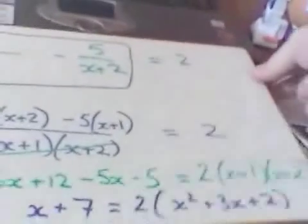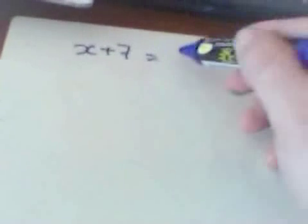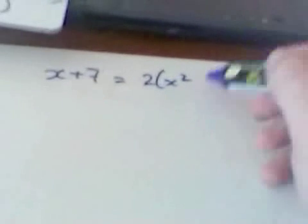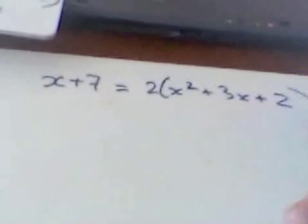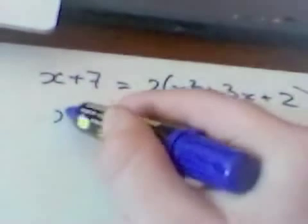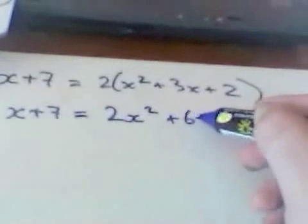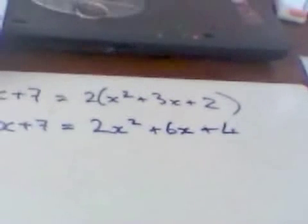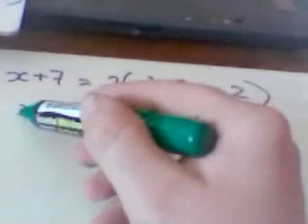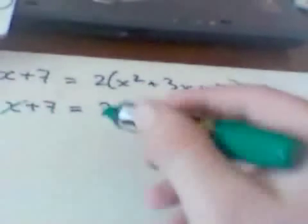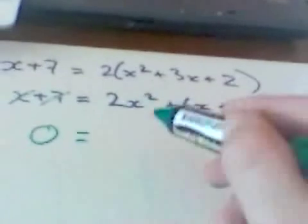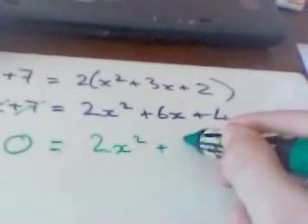At that point I run out of board space. So continuing, I've got x+7 equals 2 lots of (x²+3x+2). I'm now going to multiply it out and simplify: x+7 equals 2x²+6x+4. Cancel out where possible, so I can cancel an x here and take away 7 from both sides as well.